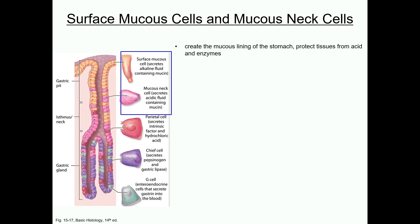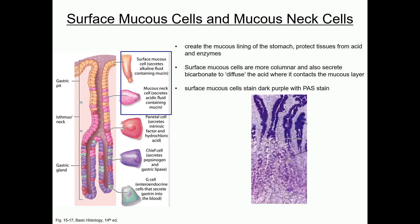Lining the pits and in the glands are the mucous cells — the cells that create the mucous lining for the stomach and protect the tissues from acids and enzymes. There are two types: surface mucous cells that are more columnar, line the pits and secrete mucin and bicarbonate; and mucous neck cells located in the pits and throughout the glands. These are fewer in number, and they do secrete mucin, but their fluid is more acidic.